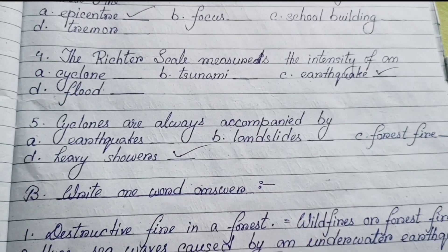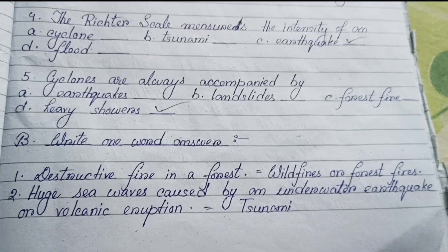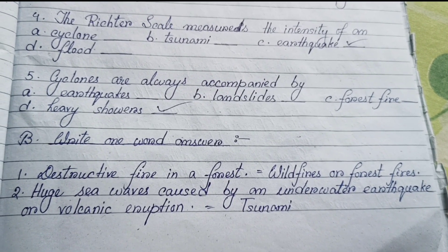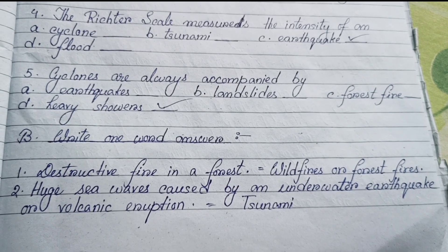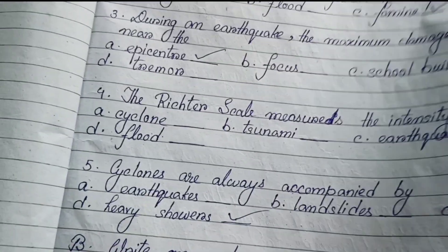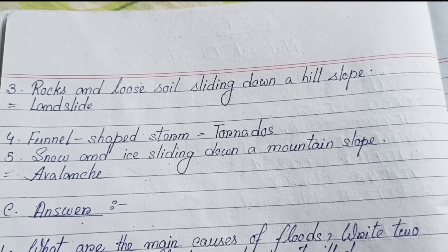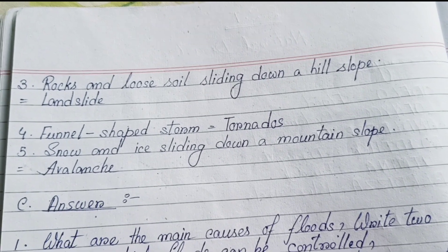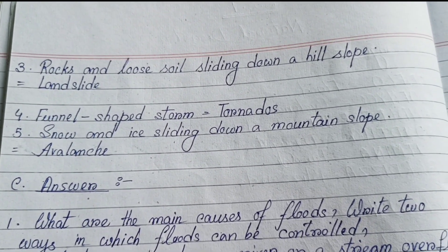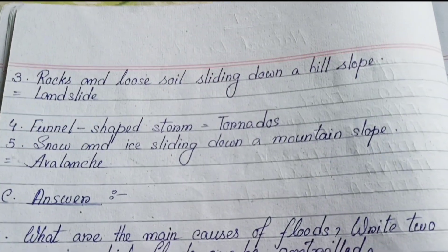Next, one-word answers. Number one: destructive fire in a forest — wildfire or forest fires. Number two: huge sea waves caused by an underwater earthquake or volcanic eruption — tsunami. Number three: rocks and loose soil sliding down a hill slope — landslide. Number four: funnel-shaped storm — tornadoes. Number five: snow and ice sliding down a mountain slope — avalanche.